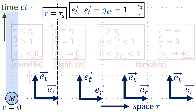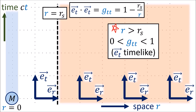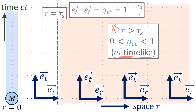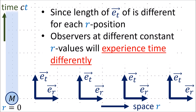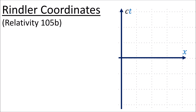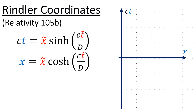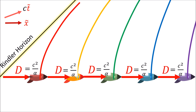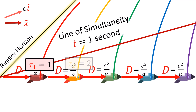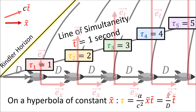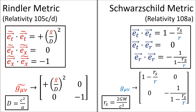For now, let's focus on the region outside the Schwarzschild radius, where et is time-like and its squared length is positive. Since the length of the et basis vector differs for each r position, observers moving through time at various constant r values will experience time differently. We saw a similar effect in Relativity 105b in flat spacetime in the accelerated reference frame given by the Rindler coordinate system, where observers at different constant x values experience different amounts of proper time for the same coordinate time, because the lengths of their time basis vectors are different. The effect is not exactly the same because the Rindler metric and the Schwarzschild metric have different tt components.